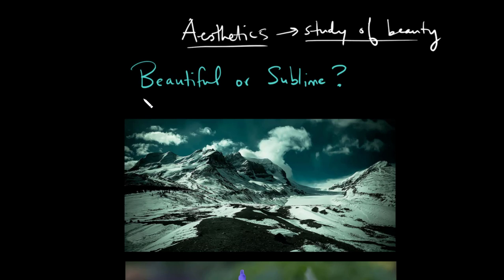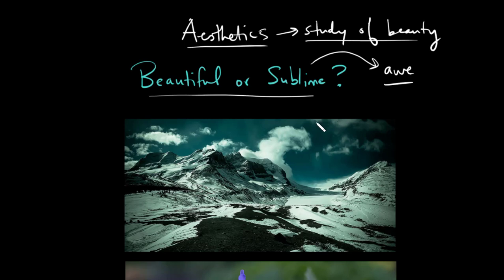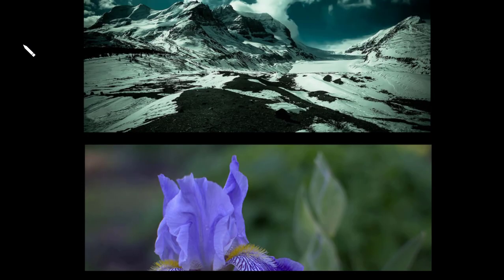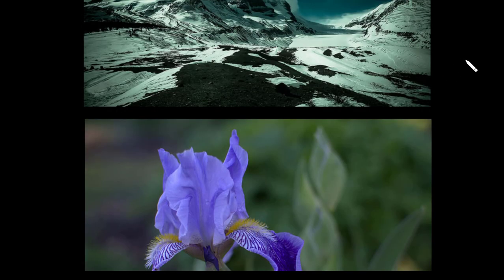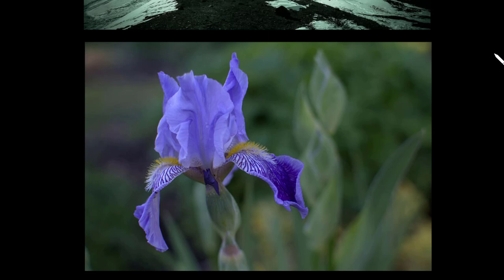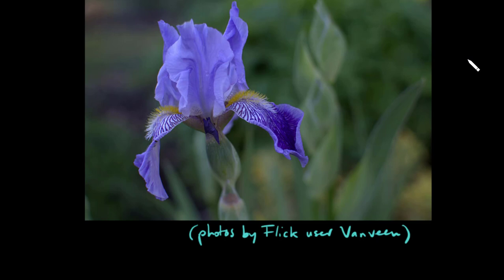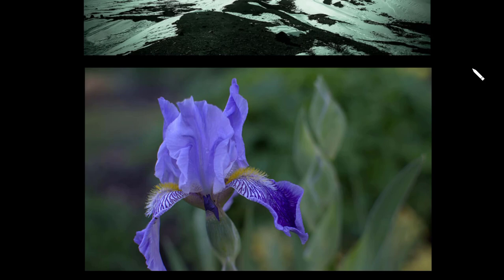One key question in this field is: is there a difference between what is beautiful and what is sublime? By sublime we mean something that causes awe, that leaves you spellbound and amazed. The sublime is typically also quite epic in character. If you look at these two pictures — which one is more sublime and which is more beautiful? The mountains are more sublime and the iris, the flower, is more beautiful.